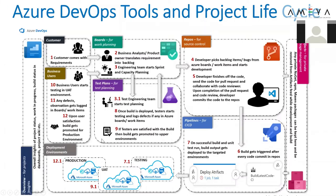You can see this picture in two ways: first, how the end-to-end process works in IT — from gathering requirements from the customer all the way to production deployment. Second, how all Azure services are interlinked at each step. Azure Boards, Repos, Pipelines, Artifacts, and Test Plans — all five services are covered. If you learn all five services, you can call yourself an Azure DevOps expert.